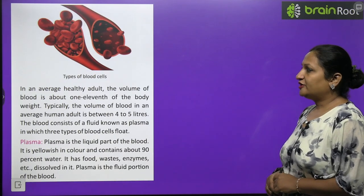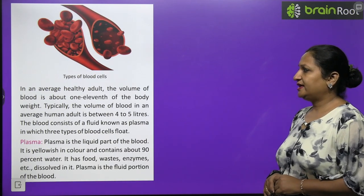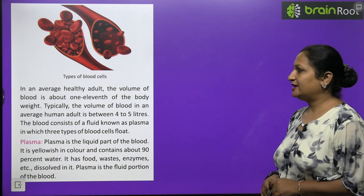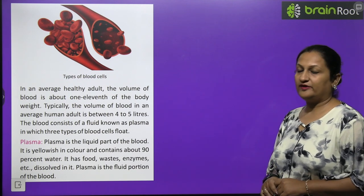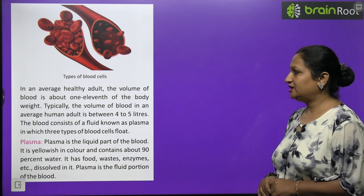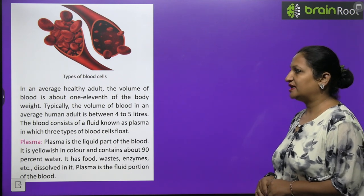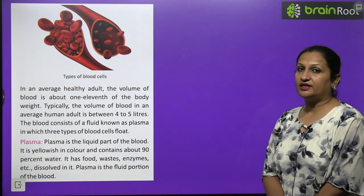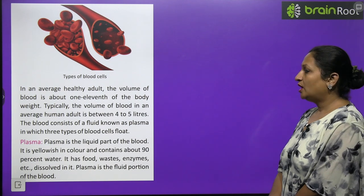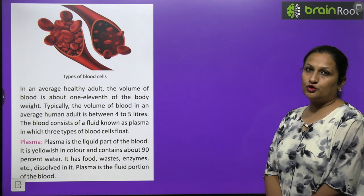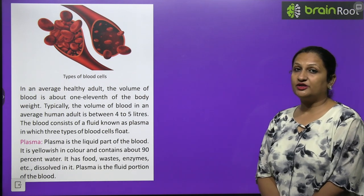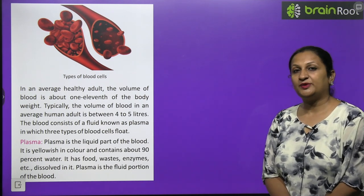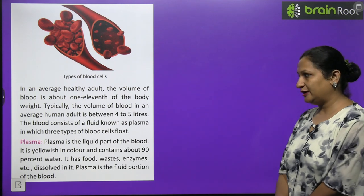In an average healthy adult, the volume of blood is about 1/11th of the body weight. Typically, the volume of blood in an average human adult is between 4 to 5 litres.